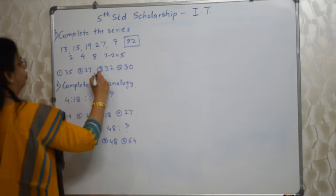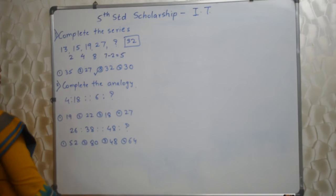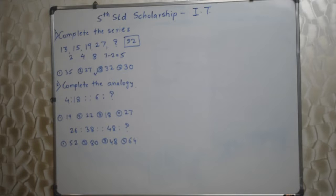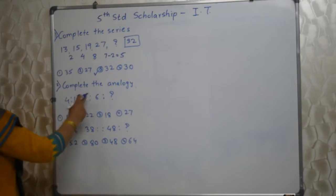So our answer is 32 — the third option. Isn't it interesting? Very very easy also. Let's go. Next: complete the analogy. 4 is to 18; 6 is to what?